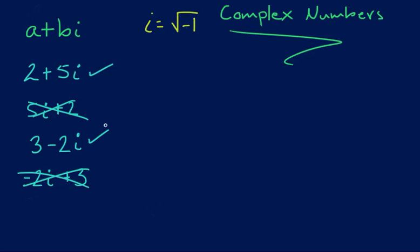So standard form is basically telling us that we're going to have the real number, plus or minus, the number with the imaginary. So basically the 5i or the 2i, and that's the thing that you're going to want to remember.